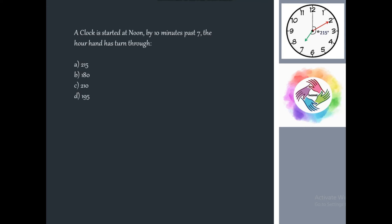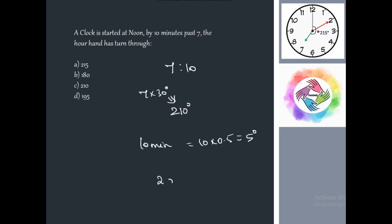Problem: A clock is started at noon. By 10 minutes past 7, how many degrees has the hour hand turned? From 12 o'clock to 7 o'clock is 7 hours, and every hour the hour hand moves 30 degrees, so 7 × 30 = 210 degrees. Then for the additional 10 minutes: 10 × 0.5 = 5 degrees. Total: 210 + 5 = 215 degrees. Answer: option A.